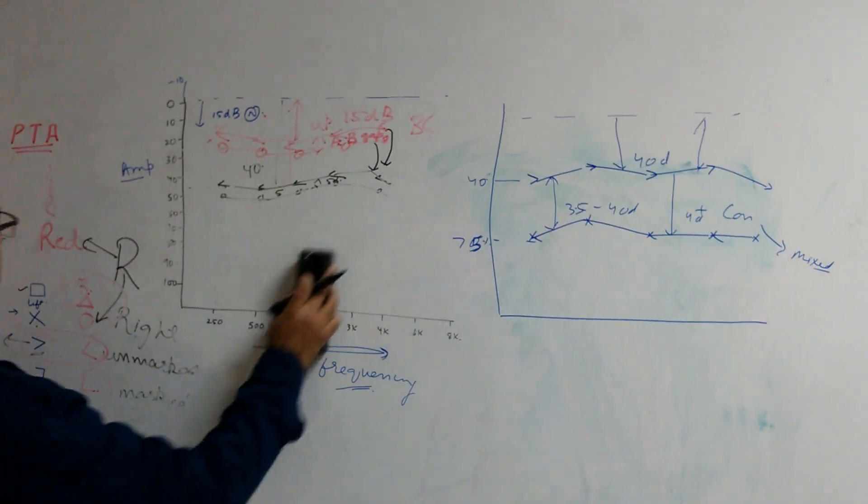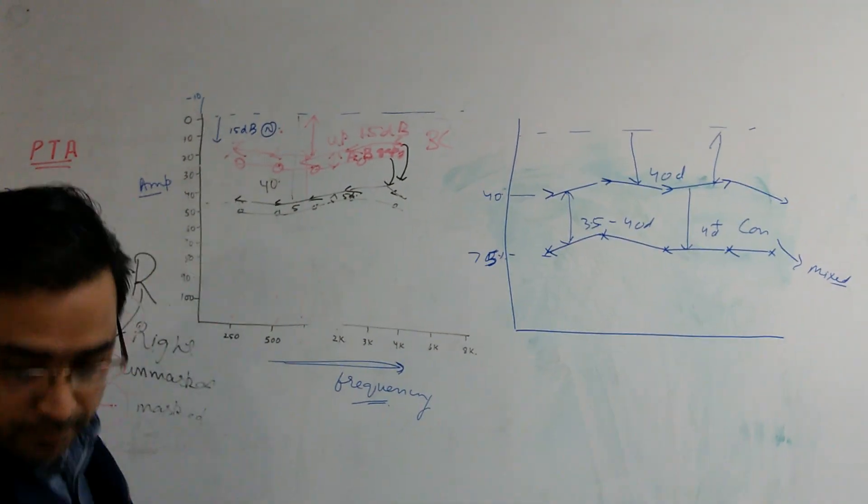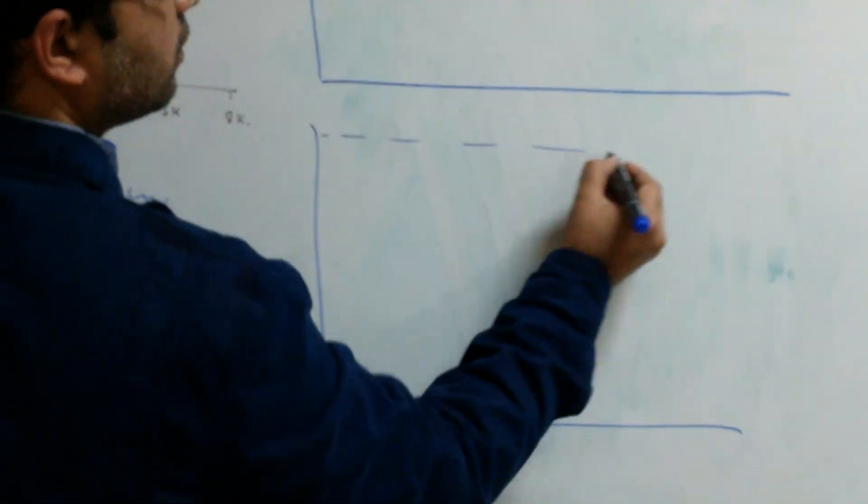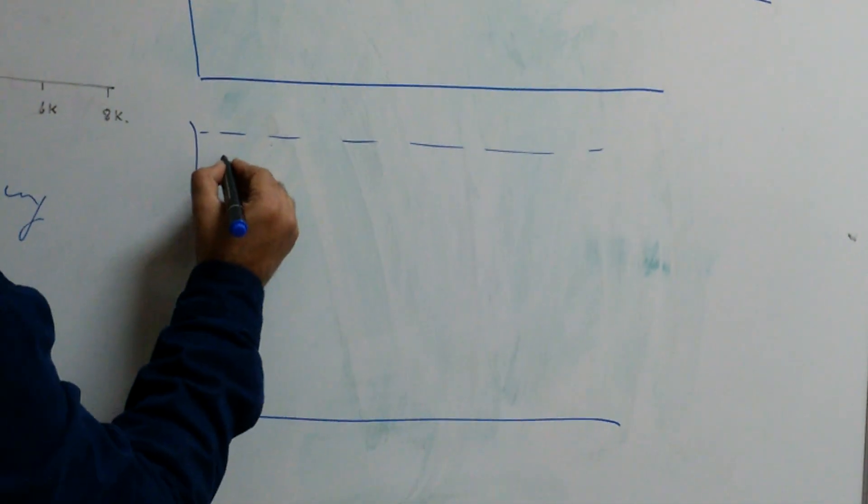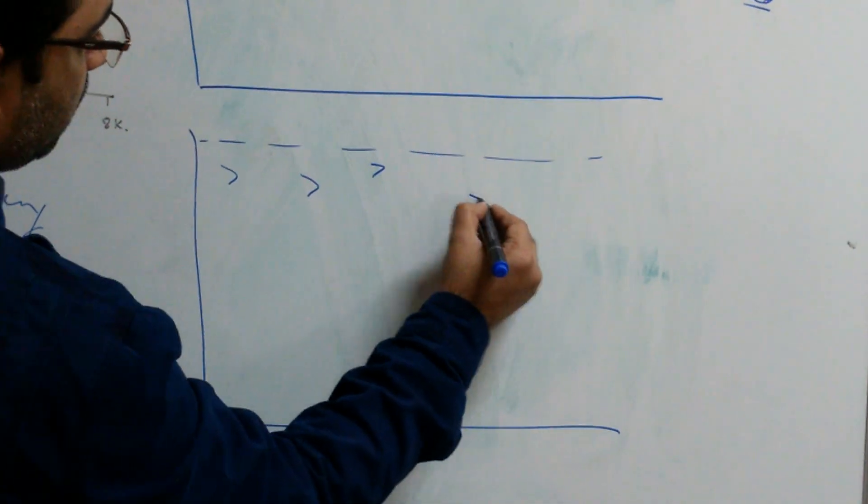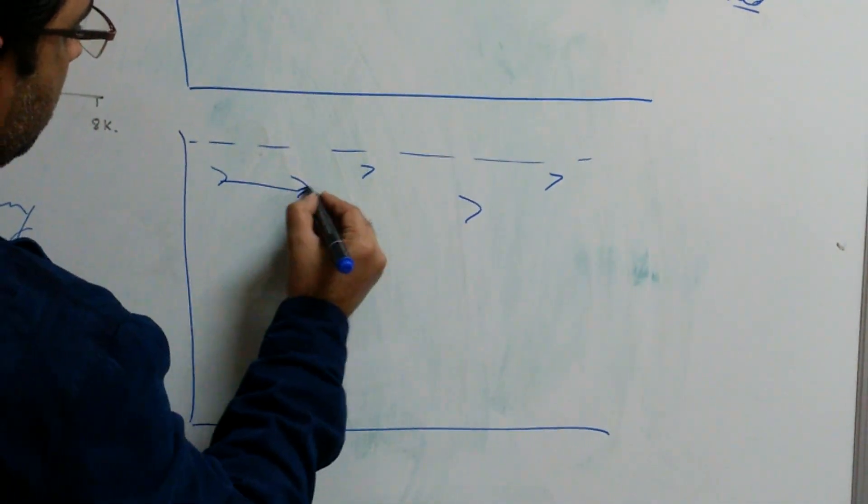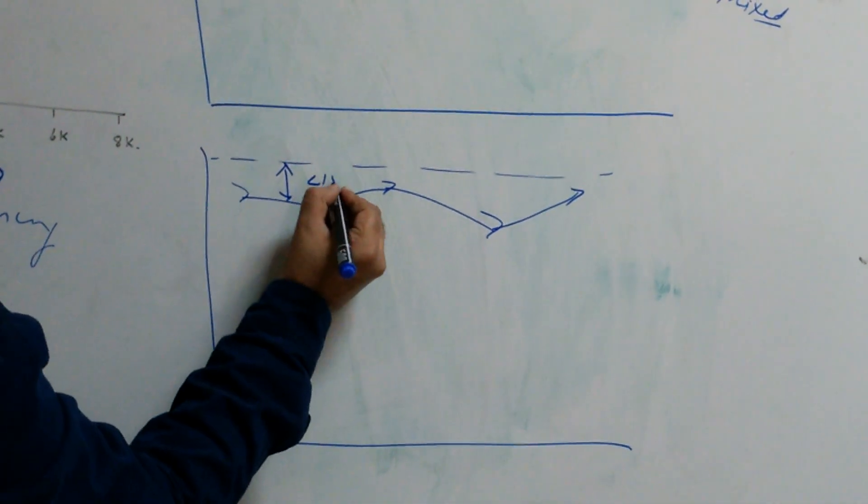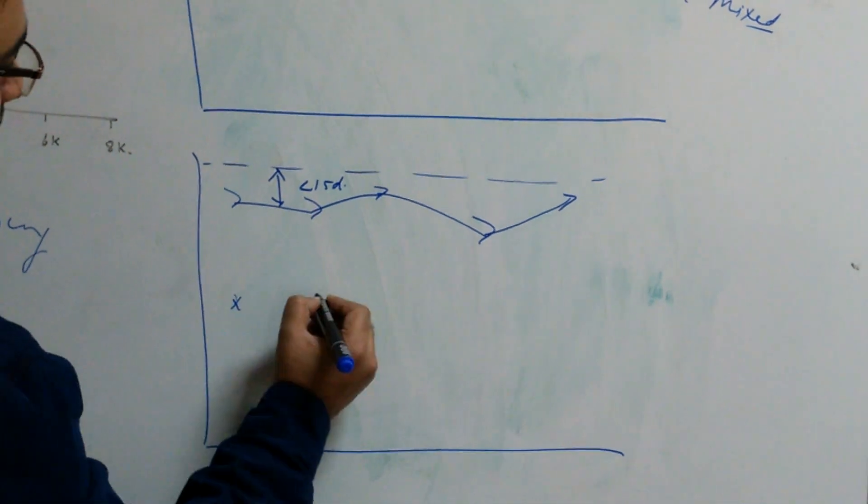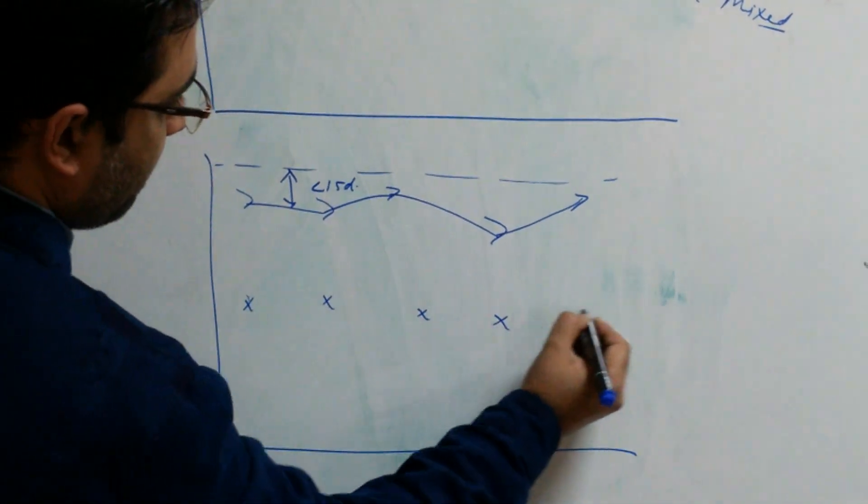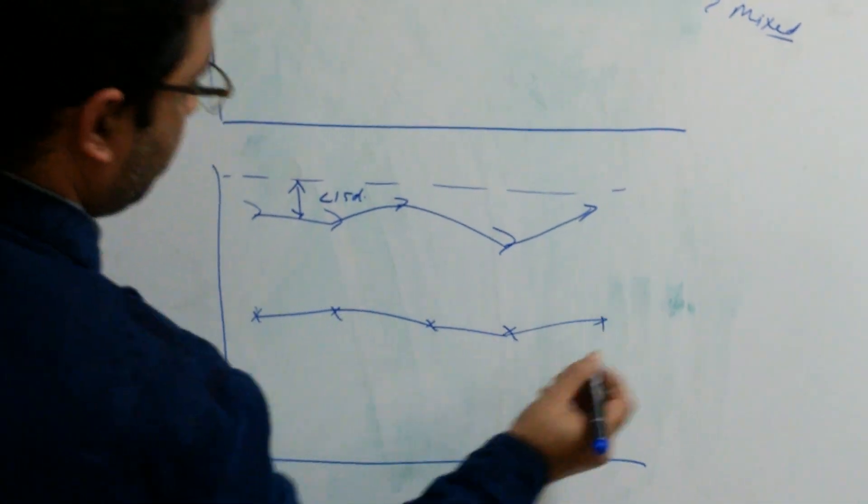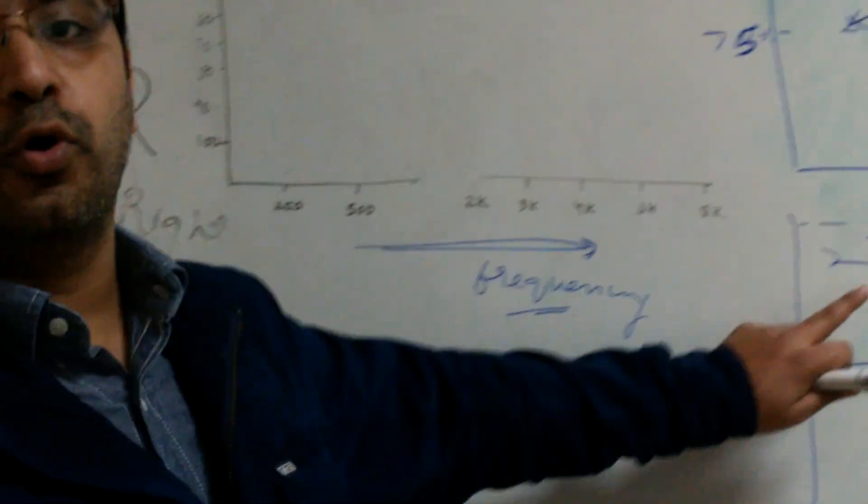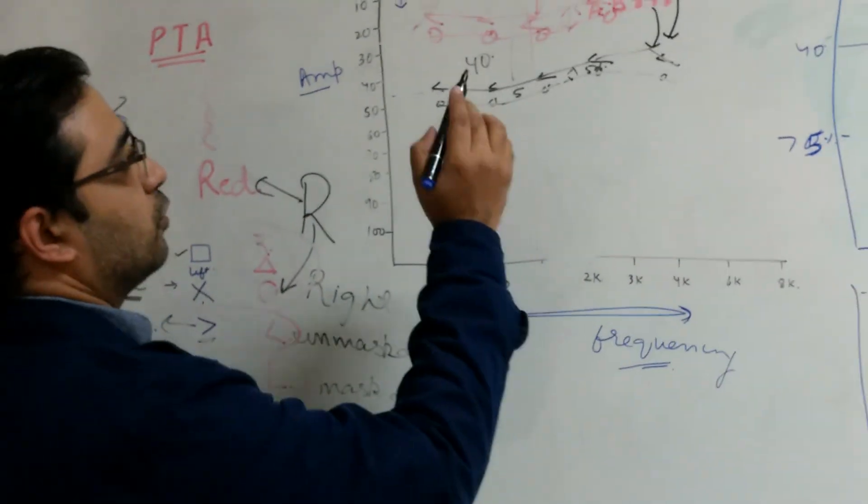Now another case if we see, suppose this is normal bone conduction, this is less than 15 decibels, air conduction is 45 decibels. This is pure conductive hearing loss.